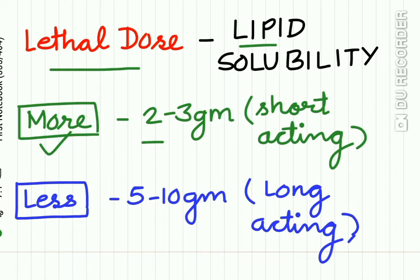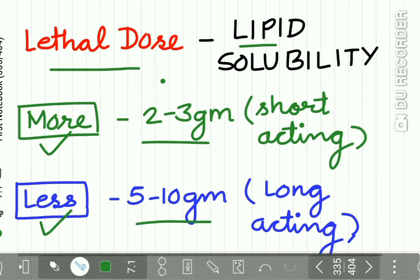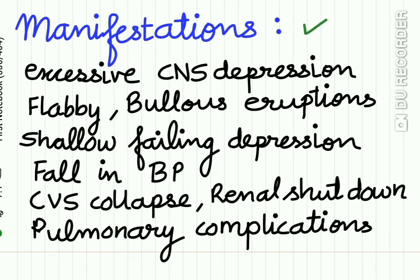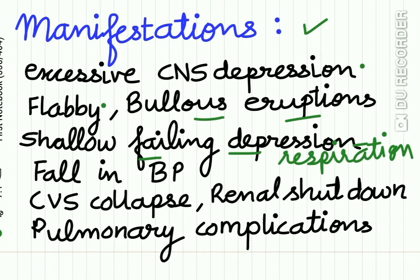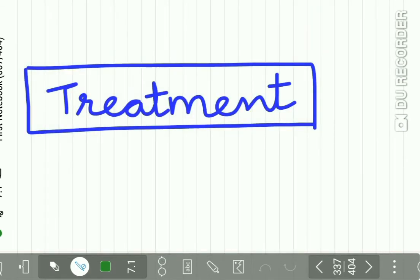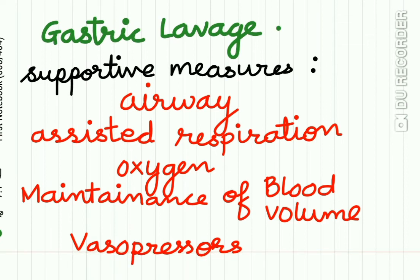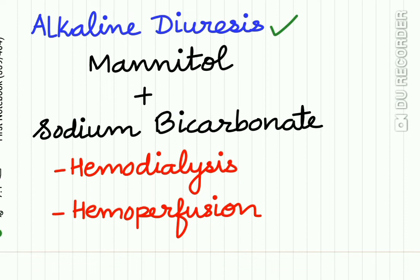Regarding acute barbiturate poisoning: with higher lipid solubility, even 2–3 grams may be lethal; with lower lipid solubility, 5–10 grams can be lethal. Manifestations include excessive CNS depression, flaccid patient, bullous eruptions, shallow and failing respiration, fall in BP, severe collapse, renal shutdown, and pulmonary complications. Treatment includes gastric lavage, supportive measures such as airway management, assisted respiration, oxygen, maintenance of blood volume, and use of vasopressors. Alkaline diuresis may be done with mannitol and sodium bicarbonate, followed by hemodialysis and hemoperfusion.